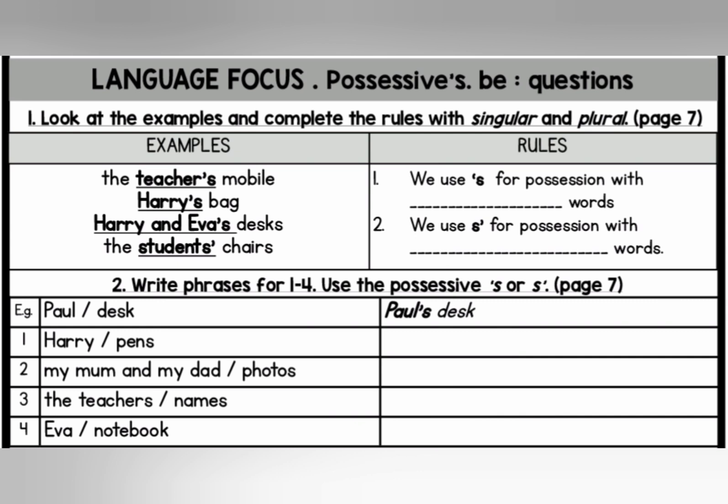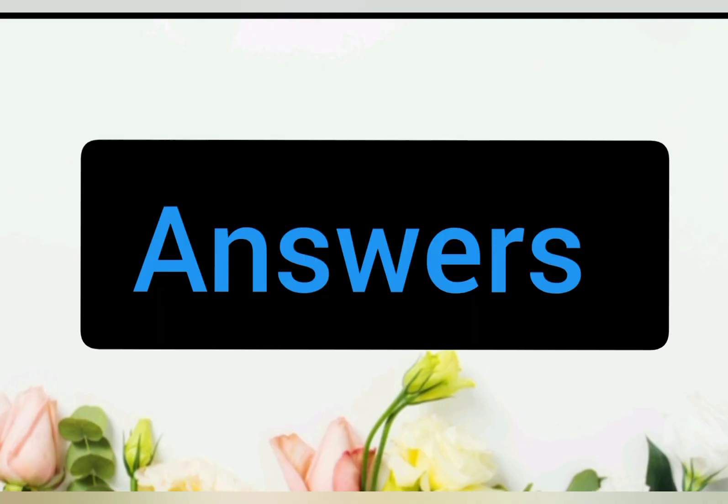And the second one: we use S apostrophe for possession with — you should write singular or plural words. Alright, let's proceed to the next one. You have to write phrases using the possessive apostrophe. Untuk latihan nombor dua, anda harus tulis semula ayat pendek tersebut dan letakkan koma S atau S koma untuk menunjukkan kepunyaan. You can pause the video to do your exercise. Anda boleh berhentikan video ini seketika untuk menjawab soalan. Let's check the answers together — mari kita semak jawapan bersama-sama.